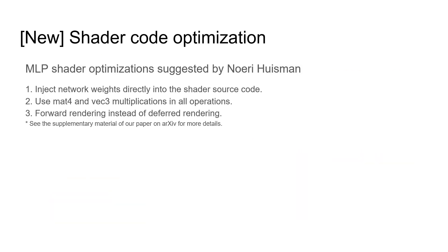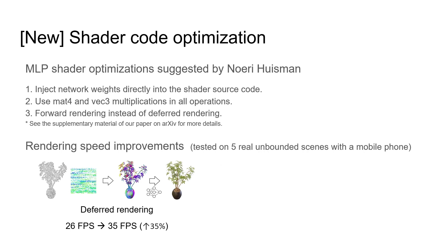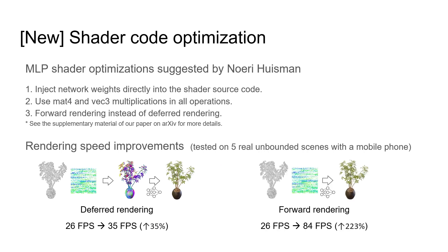More recently, with the optimizations suggested by Nori, we have greatly improved the rendering speed of the MLP fragment shader. In our deferred rendering setting, the speed has been improved by more than 30%. More impressively, the MLP shader is so fast that forward rendering without an intermediate feature image is even faster than deferred rendering on some mobile devices, tripling the rendering speed compared to our original implementation.